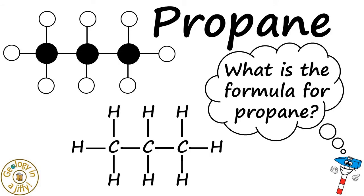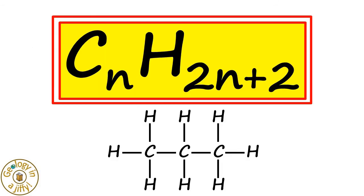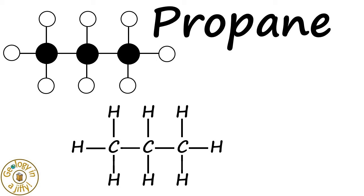That's amazing! So what is the formula for propane? Using our alkane formula of CnH2n+2, and knowing that propane has three carbon atoms in it, and has this structural diagram, we now know that the formula for propane is C3H8.